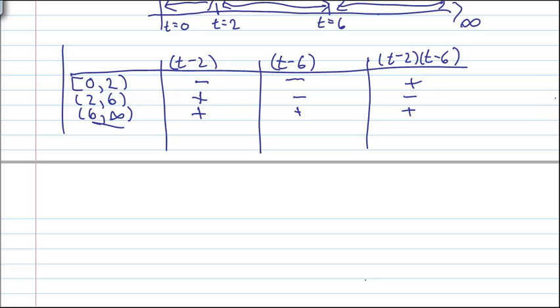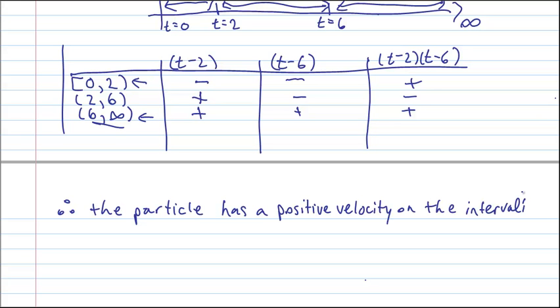So, upon observation of this chart, on this interval, I'll get a positive velocity, as well as on this interval. Therefore, the particle has a positive velocity on the interval, including 0 to 2, not inclusive, because my function would be 0 at 2. Now, I'm going to skip the middle interval, and then I will go from 6 all the way, approaching infinity. So, what this is saying is, it includes the interval from 0 inclusive to 2, and the interval from 6 to infinity.